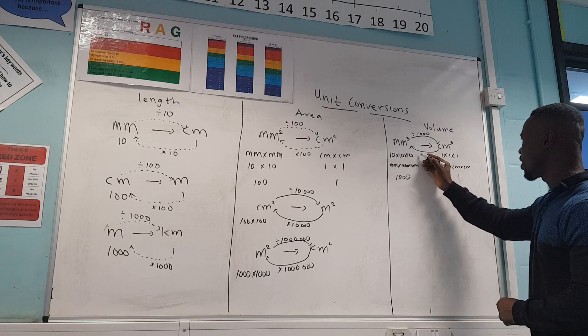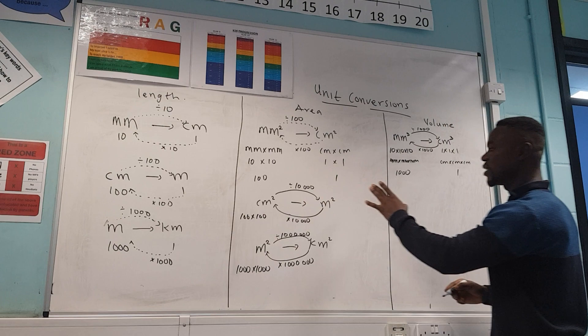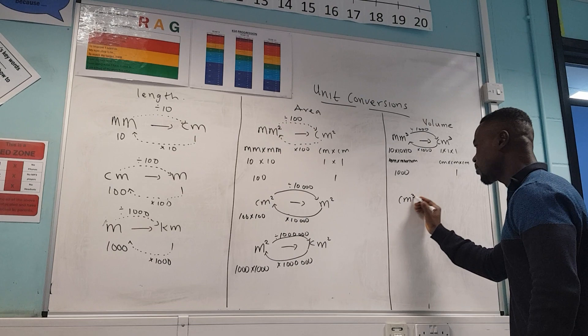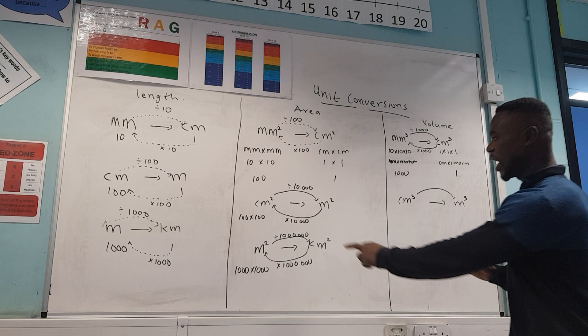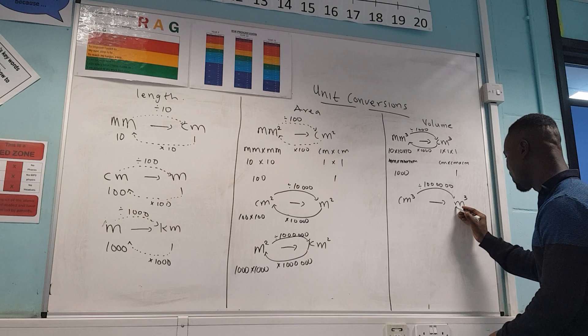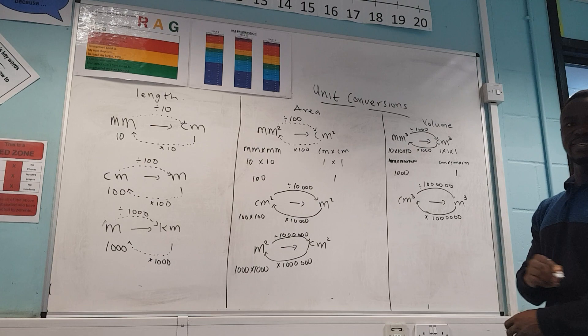Follow the same principle for centimeters cubed to meters cubed. It's 100 times 100 times 100, which gives six zeros. So you divide by one million going that direction, and you multiply by one million going the other way.